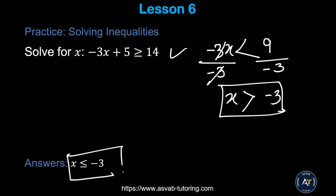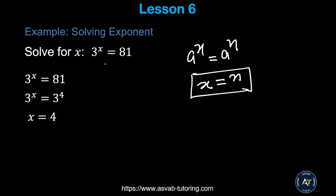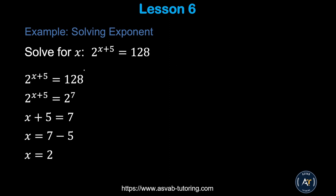Now we'll solve exponential equations. The key rule is: if aˣ = aⁿ, then x = n. For 3ˣ = 81: rewrite 81 as 3 × 3 × 3 × 3 = 3⁴. So 3ˣ = 3⁴, meaning x = 4. Apply the same approach to the next problem.